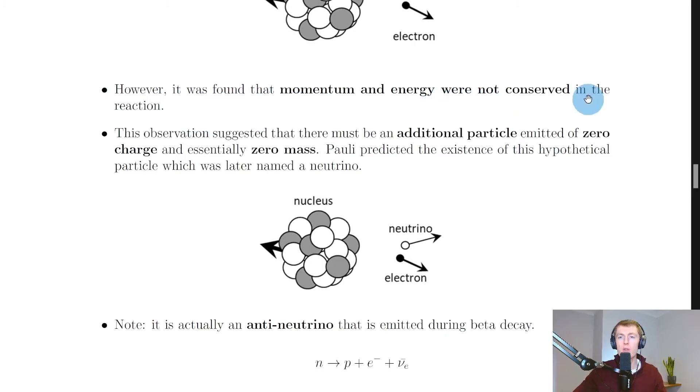However, it was found that momentum and energy were not conserved in the reaction. That tells us that momentum and energy were not the same before and after the reaction, i.e. before and after the electron was fired off and the neutron changed into a proton.